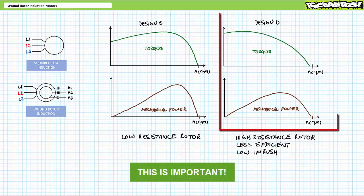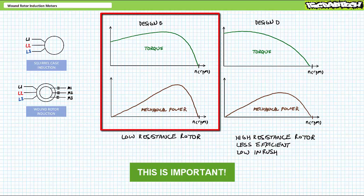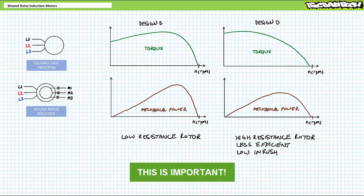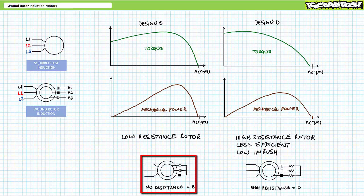Wouldn't it be great if you could have the high torque starting ability and low inrush current demand of a high resistance design D rotor, and when the load is actually moving, switch back over to a low resistance design B rotor such that it operates more efficiently at higher rotational speed? Wound rotor induction motors allow this duality. This would be impossible for a squirrel cage induction motor lacking access to the rotor. However, wound rotor induction motors with slip rings on the rotor permit a degree of customization to the rotor circuit, thus a degree of flexibility to meet the needs of a particular application. You want design B operation? Don't add resistance. You want design D operation? Add resistance. Additionally, a primitive form of variable speed operation can be accomplished by varying the resistance of the wound rotor induction motor rotor circuit while in operation.